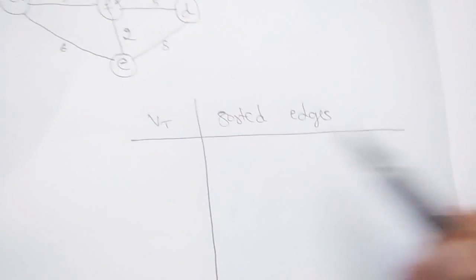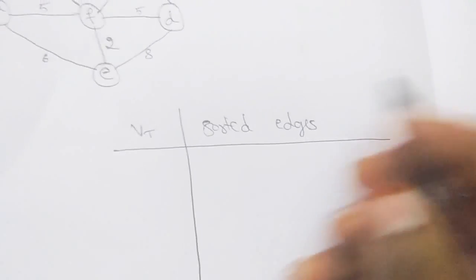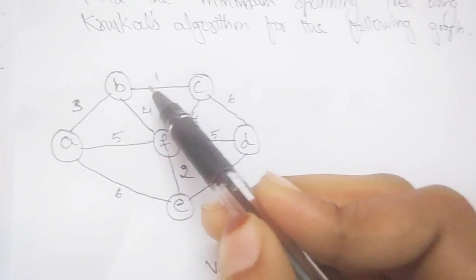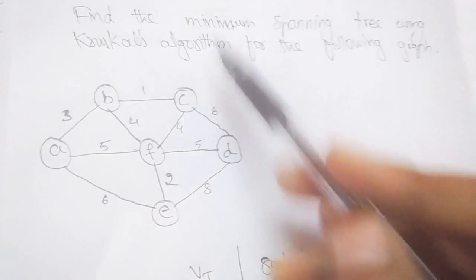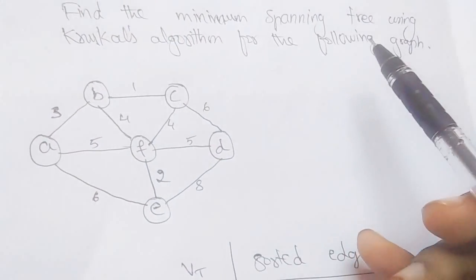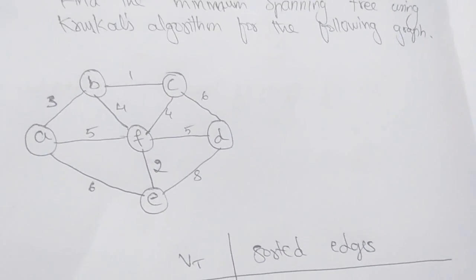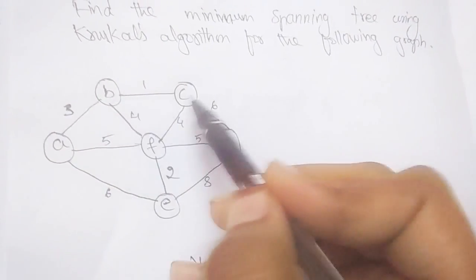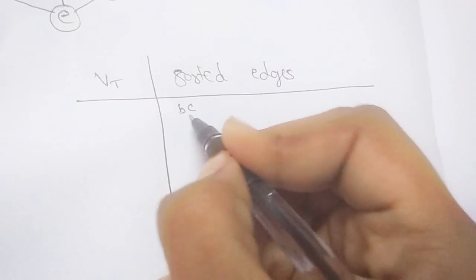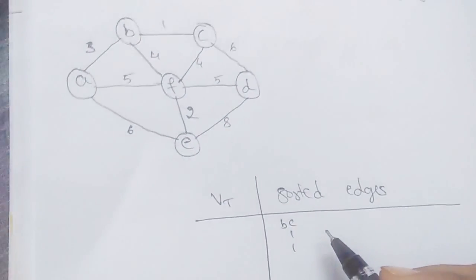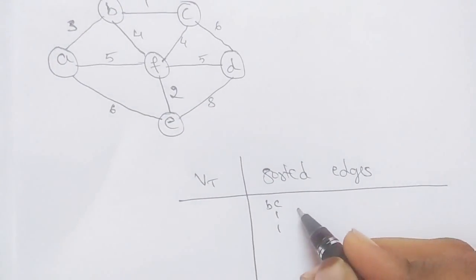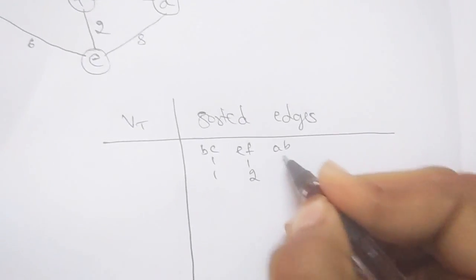Under 'sorted edges' you are going to sort the edges with their weights in ascending order. VT represents vertices. According to Kruskal's algorithm, we first arrange edges with their weights in non-decreasing order. We take BC with weight 1, which is the minimum, and then EF with weight 2.